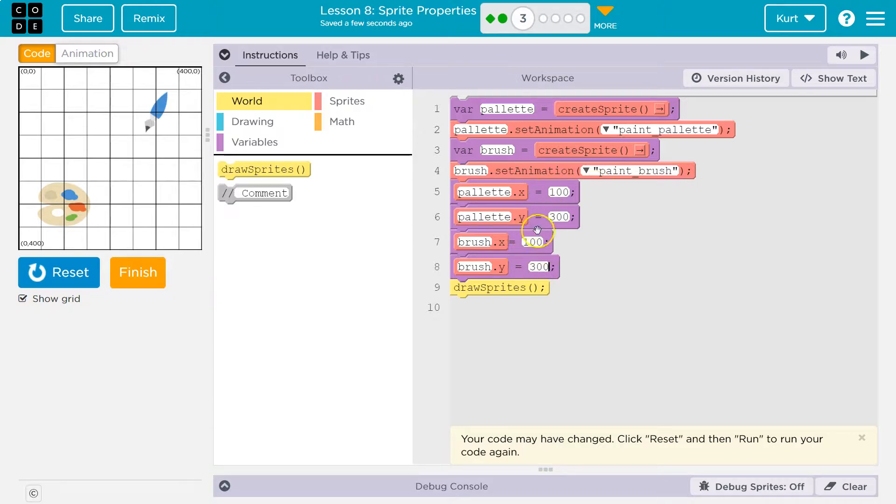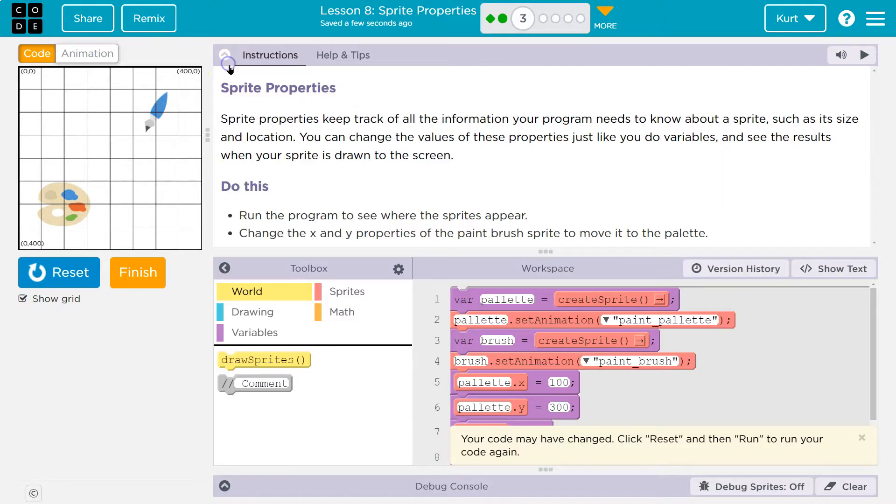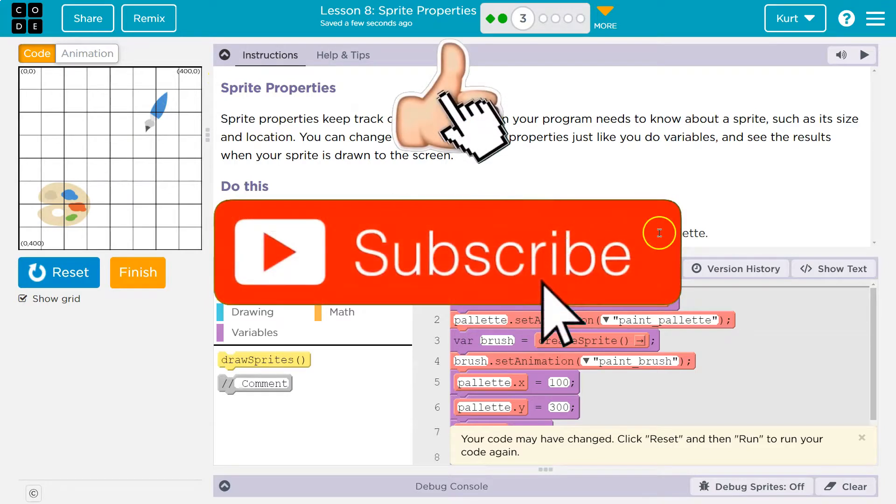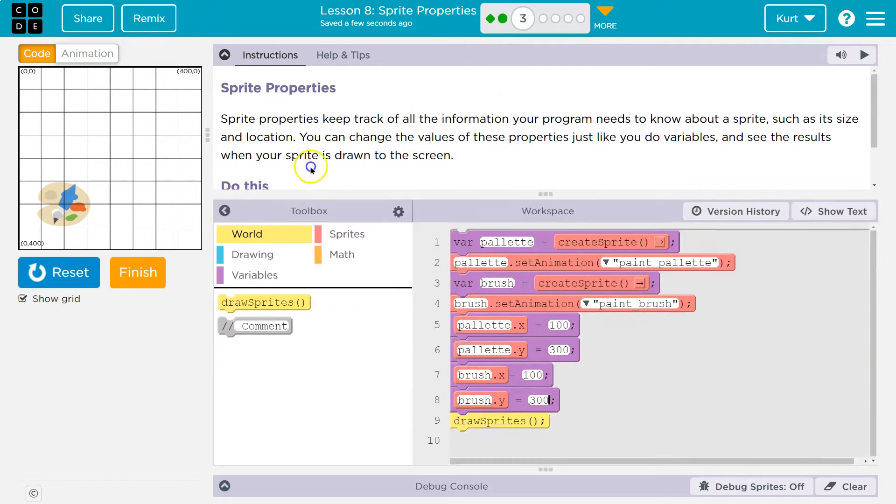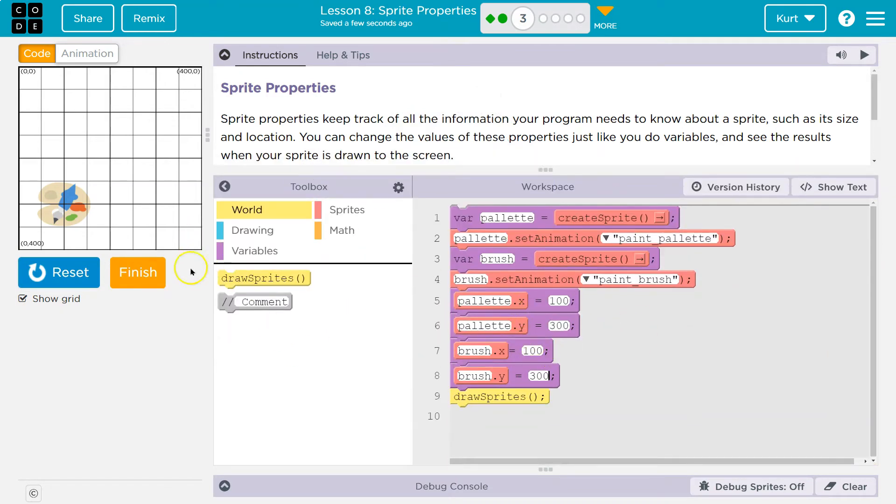100 for x, 100, 300, 300 as the brush. Run the program, change the x and y, paintbrush sprite to move to the palette. Yep. Boom. Ta-da! We just need to match x and y. Let's keep going.